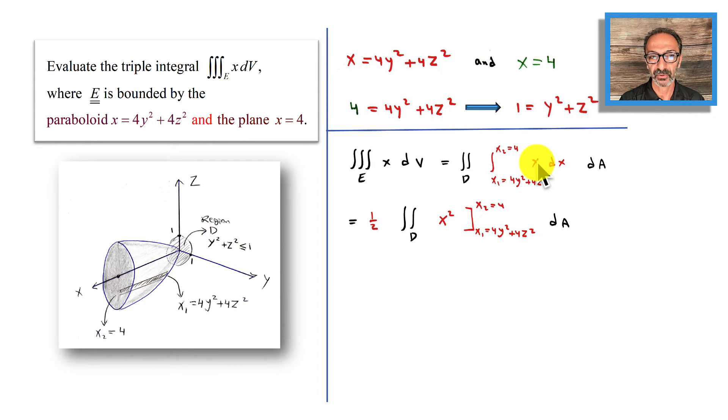X becomes x² over 2. I took the half outside. Plugging in 4, that's 4², and plugging in 4y² plus 4z², everything is squared. The reason I'm writing my notes ahead of time is to save you time from watching a lengthy video. I don't want to be drawing or changing colors as I'm recording.